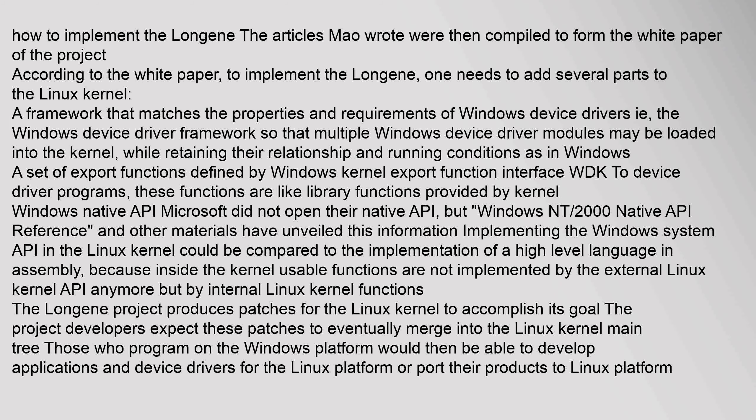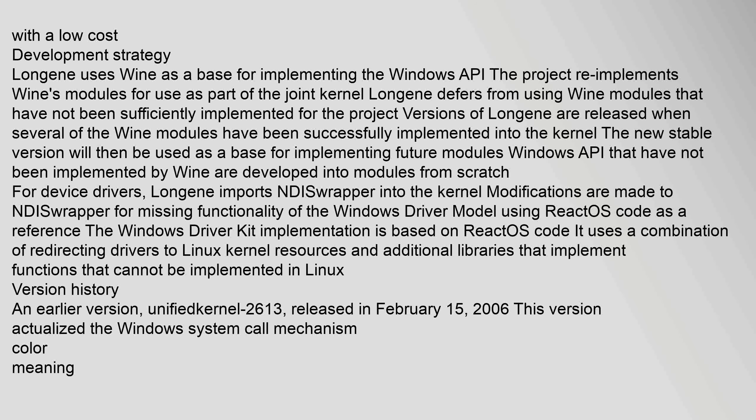With a low-cost development strategy, Longin uses Wine as a base for implementing the Windows API. The project re-implements Wine's modules for use as part of the joint kernel. Longin defers from using Wine modules that have not been sufficiently implemented. Versions of Longin are released when several Wine modules have been successfully implemented into the kernel. Windows APIs not implemented by Wine are developed into modules from scratch. For device drivers, Longin imports NDIS wrapper into the kernel, with modifications made for missing functionality of the Windows driver model using ReactOS code as a reference.